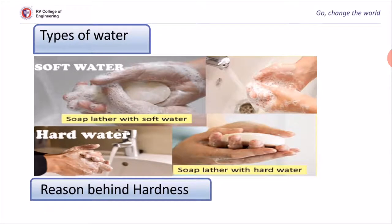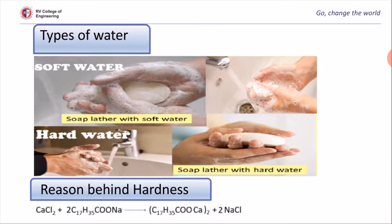What is the reason behind hardness? Soap is usually the sodium or potassium salt of higher fatty acids like stearic acid. When soap is treated with hard water, calcium or magnesium salts react with some amount of soap, forming insoluble calcium or magnesium stearates which float at the top in the form of scum. As long as this insoluble compound is present, the water does not give lather when treated with soap solution.